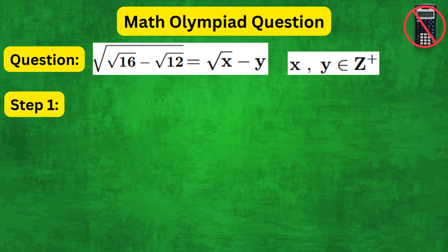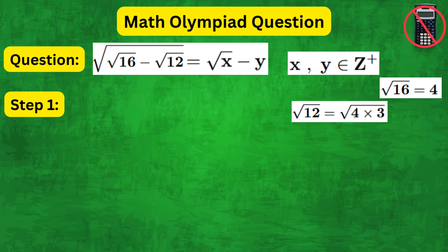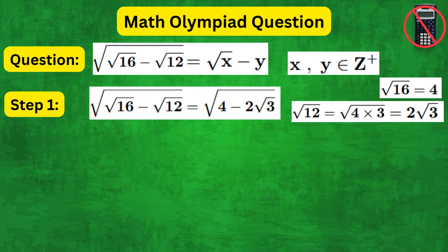To begin with, we recognize that root 16 is equal to 4, and root 12 is equal to square root of 4 times 3, which is 2 root 3. Therefore, the question can be written as square root of 4 minus 2 root 3.